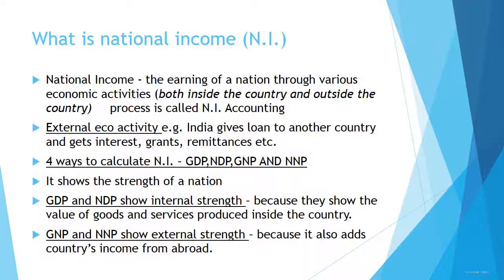National income is basically the earning of a nation through various economic activities. These include both internal and external economic activities. Internal economic activities are all activities that take place inside the territory of a nation which involve monetary transactions — for example, going to a market and buying a packet of biscuits, or giving paid tuitions. Giving free tuitions to siblings does not involve monetary exchange and is therefore not an economic activity.